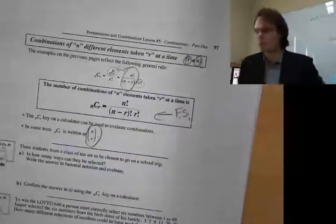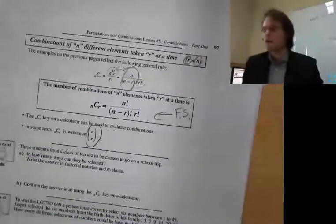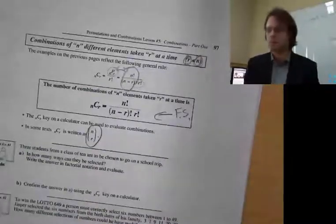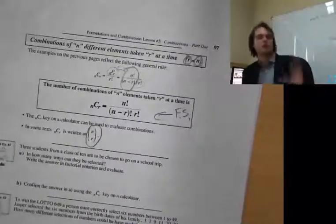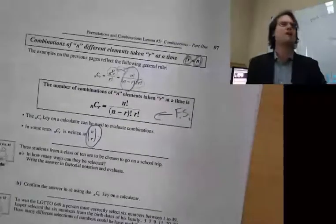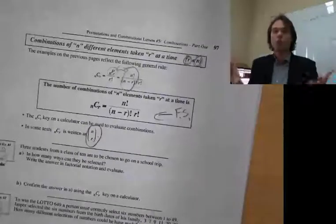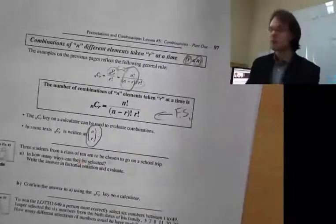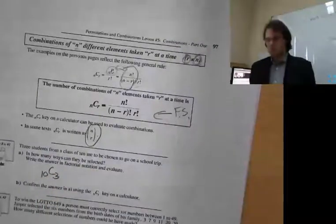First example: three students from a class of ten are to be chosen for a school trip. How many ways can they be selected? We look at this — three out of ten being selected. Does it matter if you're picked first or third? No, you're still selected, so order does not matter. That's how we know this is a combination: out of ten, we're choosing three.